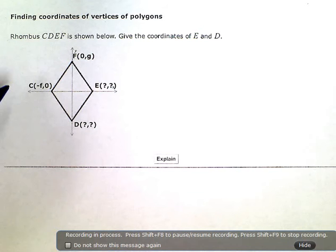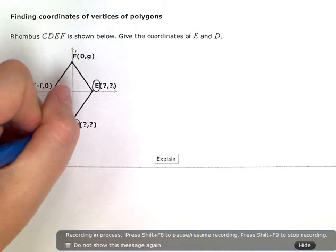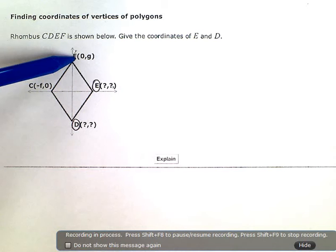So I need to give the coordinates of E right here and D. You see they just have question marks in those coordinate pairs. Now, they have given me some information here. So, for example,